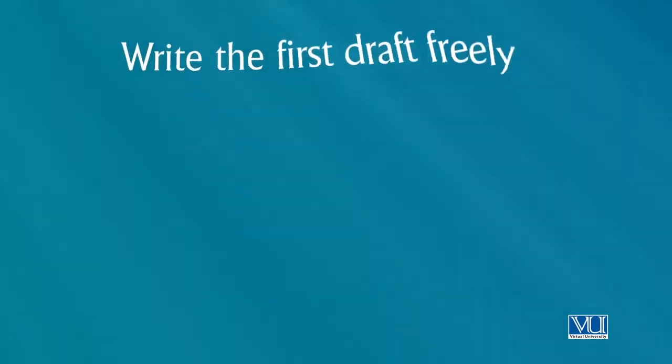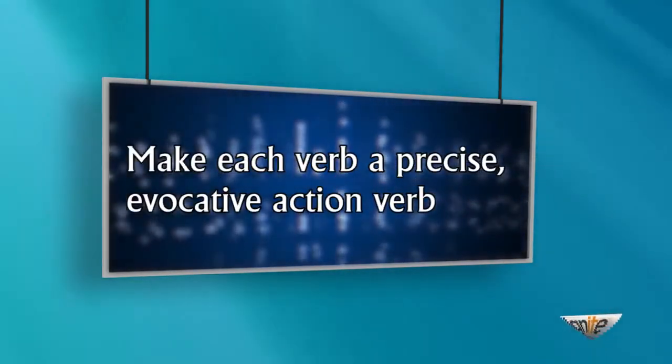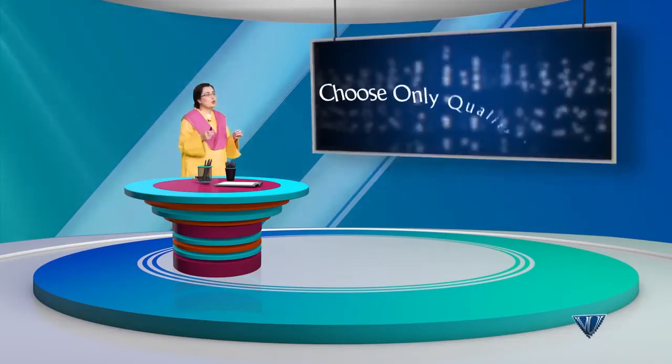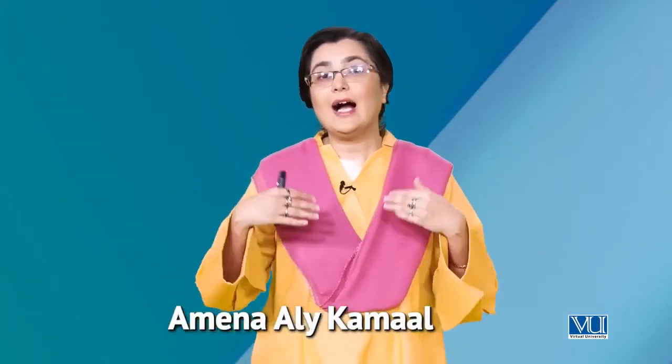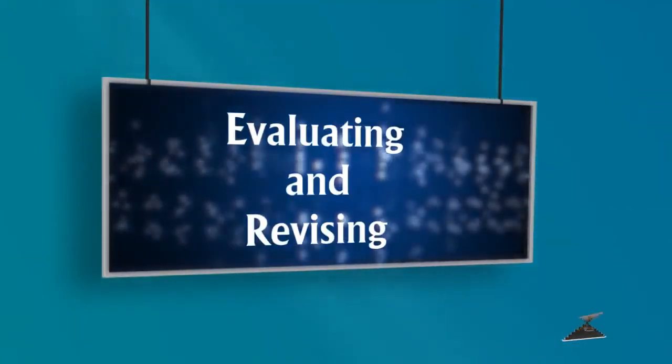Write the first draft freely — aaraam se likhein baghair darr khauf ke. Pehla draft likhte chalye jaayein — jo jo detail aapke zehen mein aa rahi hai, jo jo description aa rahi hai, likhte chalye jaayein, taaki you can capture everything that's in your mind. Make each verb — khaas taur par verb, more than noun — make each verb a precise evocative action verb, jisse koi action denote ho raha ho, kyunki isi se movement aati hai aapke storyline mein, aapke zehen mein — aap ek jagah static nahin rehte, aap hilna shuru ho jaate hain us kahaani ke andar. Choose only quality adjectives — generic adjectives jaise good, pretty, interesting — in se hat ke aise adjectives istemal kijiye jo actually kisi cheez ko detail mein describe karte hain.